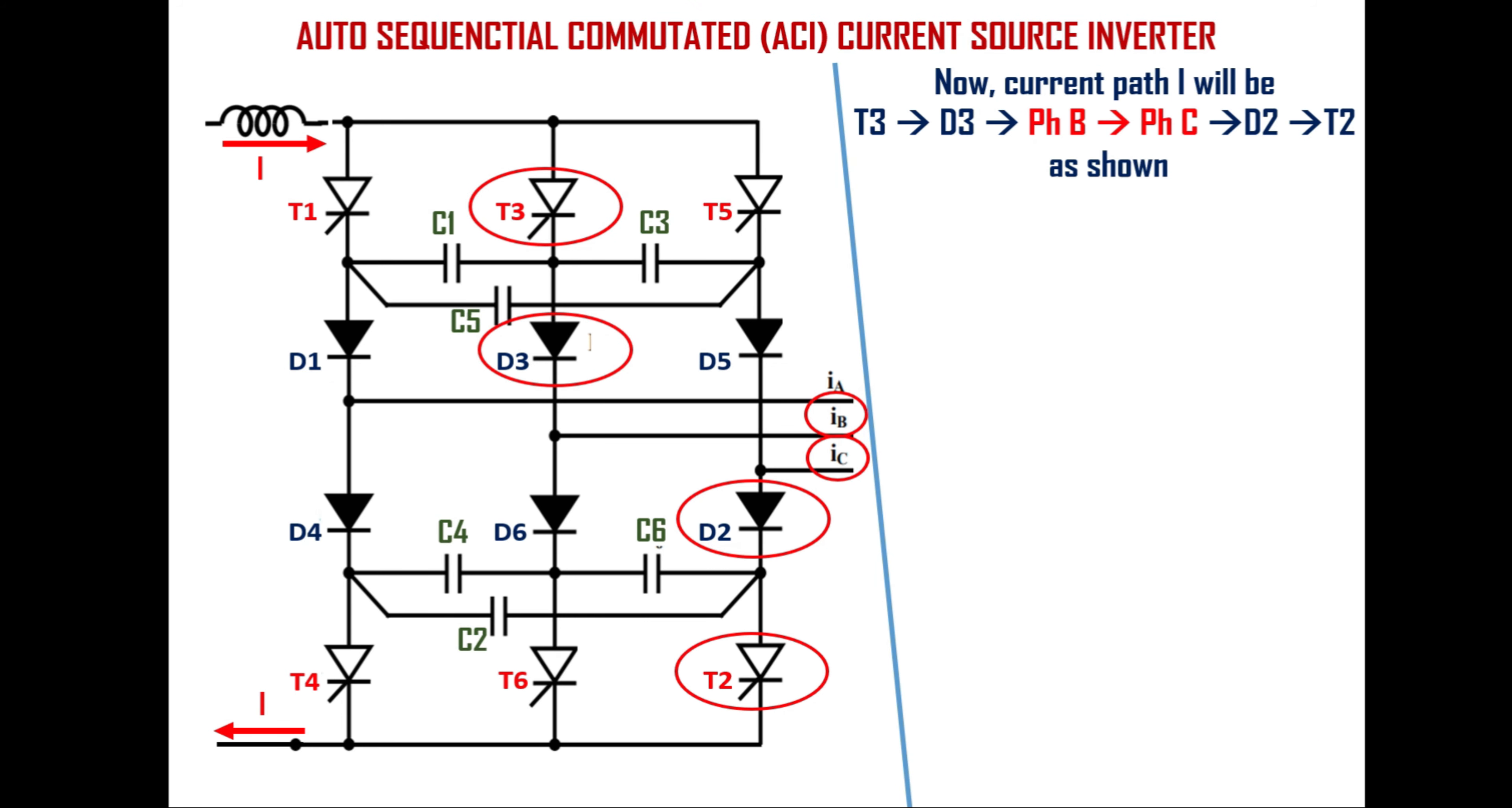Once diode D3 conducts the source current I will flow through the path of thyristor T3, diode D3, phase B, phase C, diode D2, thyristor T2 and back to the input source. Note that rate of change of current from phase A to phase B is determined by the value of capacitors. Because of these capacitors there will be a gradual transfer of current and hence can avoid voltage spikes.